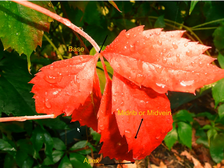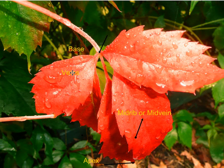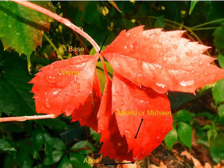If the middle part is the midrib or the midvein, then the little sections here — they're not as pronounced in my diagram — those we refer to as the veins. And you can see all these little veins in that section and coming out here as well.